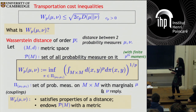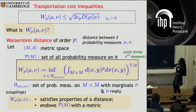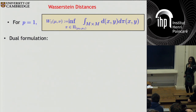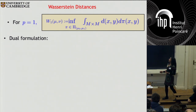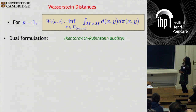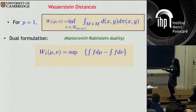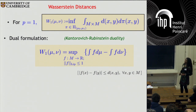For p equal to 1 the Wasserstein distance becomes particularly simple. There is also a dual formulation of W_1 due to Kantorovich and Rubinstein, which is very useful when we want to generalize to the non-commutative or quantum setting. In the Kantorovich-Rubinstein duality, you take a supremum over functions which have a Lipschitz constant of at most 1. For p equal to 2, you get a square-root outside, and if M is a smooth Riemannian manifold, this Wasserstein distance endows the set of probability measures with the structure of a Riemannian manifold.